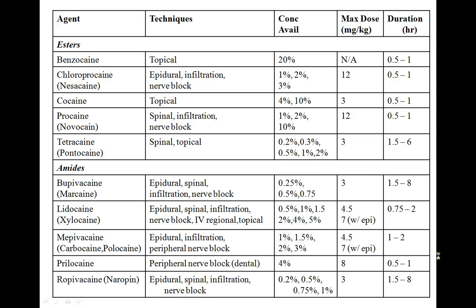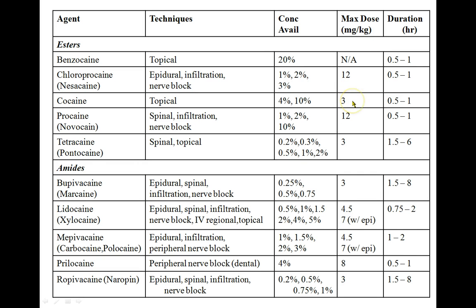This chart shows different agents and their trade and generic names, different methods of administration and commonly available concentrations, maximum dose, and typical duration of action. Note that some drugs have two maximum doses — one without epinephrine and one with — underscoring that adding epinephrine to a local anesthetic solution causes vasoconstriction and slows systemic absorption. You should certainly know the maximum doses for bupivacaine, lidocaine, and ropivacaine, and it might not hurt to know cocaine's, as you may be asked in a neurosurgery or ENT room.